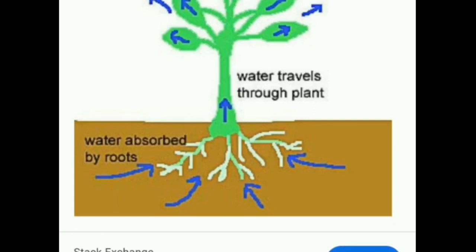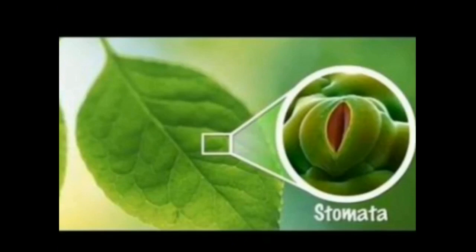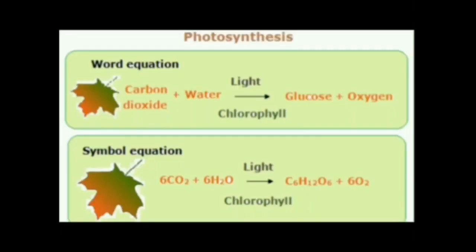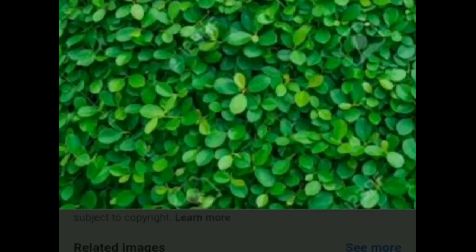Now let us see the process of photosynthesis. First, water is absorbed by the roots from the soil and passed to the leaves. Second, carbon dioxide is absorbed from the air by the stomata. Then the sunlight falls on the leaves. After this, a chemical reaction takes place: water plus carbon dioxide gives glucose and oxygen.